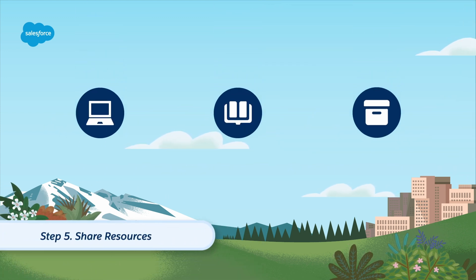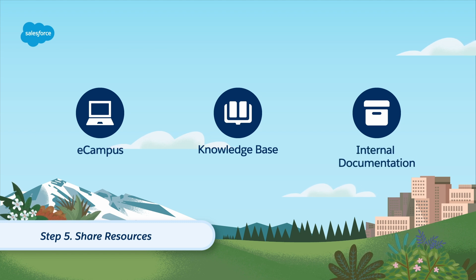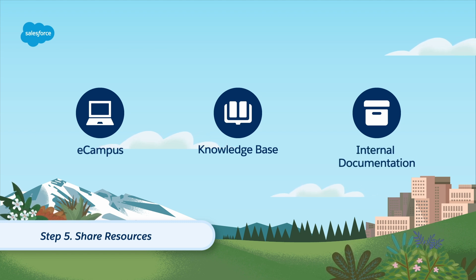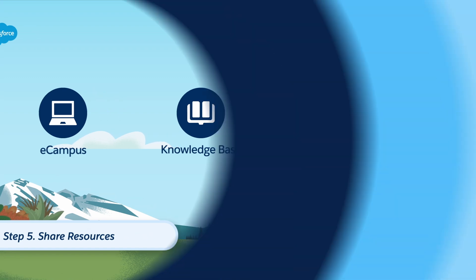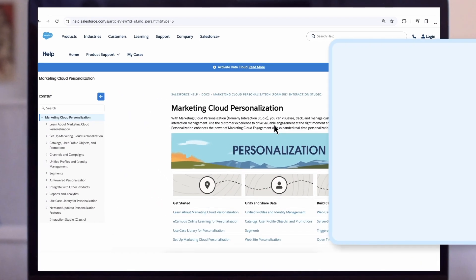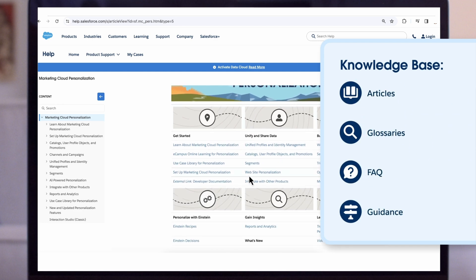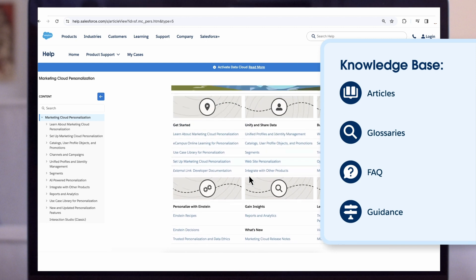Step five: share resources. Ensure key users have access to eCampus, Salesforce help resources, and internal documentation, and set a due date for eCampus learning path one. Access the knowledge base on help.salesforce.com for articles, glossaries, FAQs, and guidance for all things personalization.